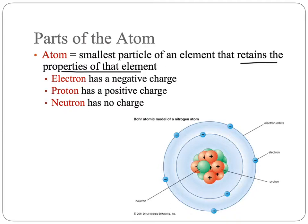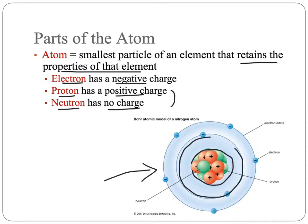The electron, which is that tiny particle that travels out in space far away from the nucleus, has a negative charge. The proton and the neutrons are found in the nucleus. The proton has a positive charge and the neutron has no charge. And the protons and neutrons are about the same size, much larger, about 2,000 times larger than the electron.